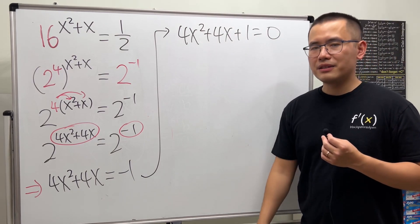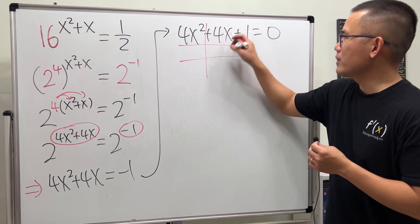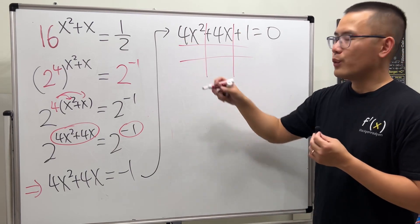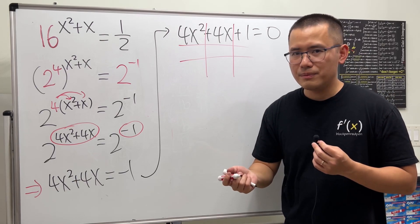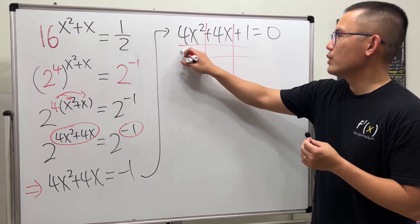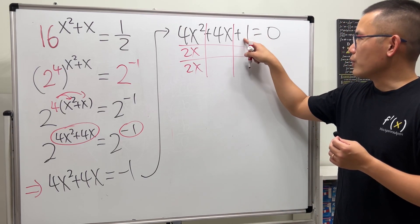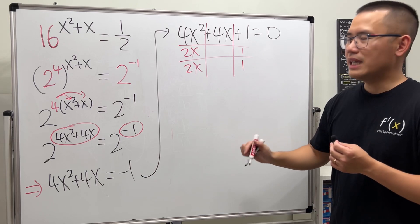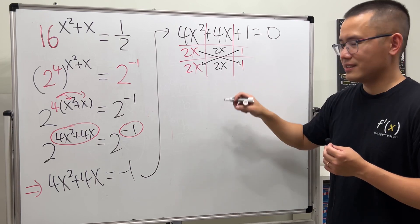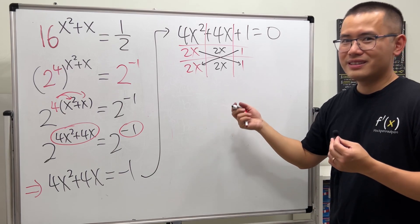Can we factor this quadratic? Yes. Using the tic-tac-toe factoring method: what times what gives 4x squared? We have 2x times 2x as a possibility, or 4x times x. The correct combination is 2x times 2x. For the constant 1, it's 1 times 1. This works because 2x times 1 gives 2x, and 1 times 2x gives 2x — together they add to 4x. It checks out.